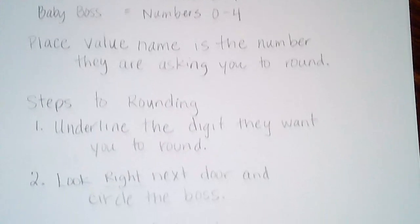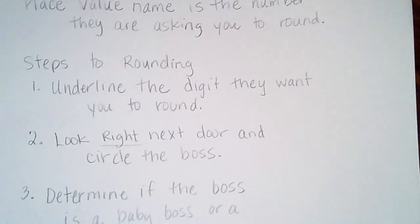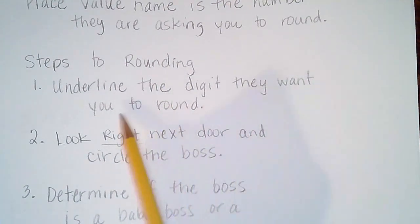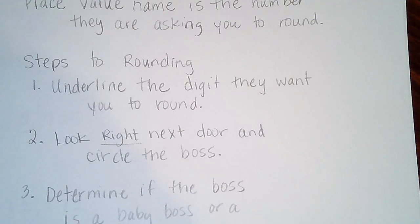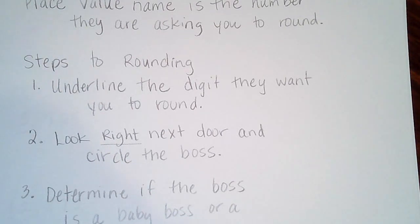Let's talk about the steps. The first step in rounding is you underline the digit they want you to round. A lot of the time, books, tests, or questions already have the digit underlined, but sometimes they don't. Sometimes they'll tell you to round to the nearest thousand and you have to know your place value names for that. That's probably the hardest part of this rounding method — finding the place value names.